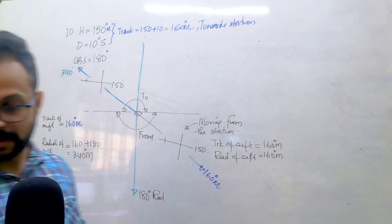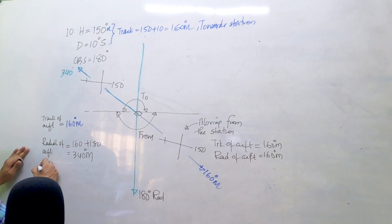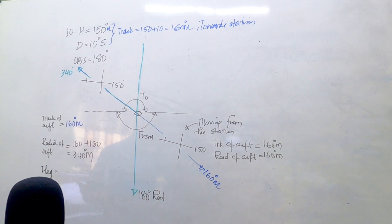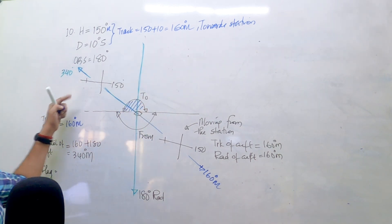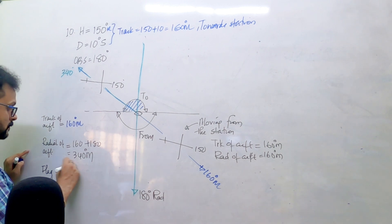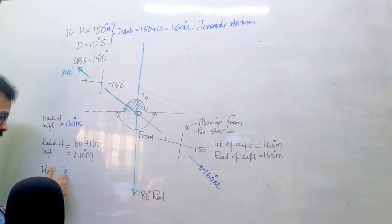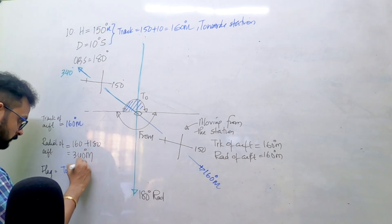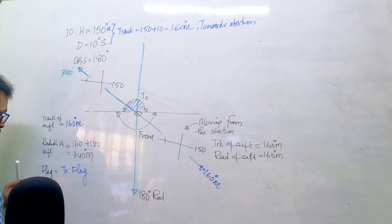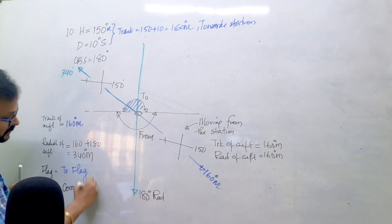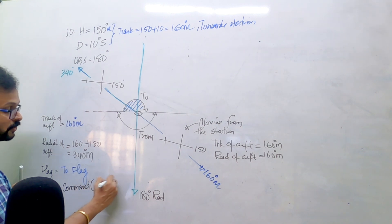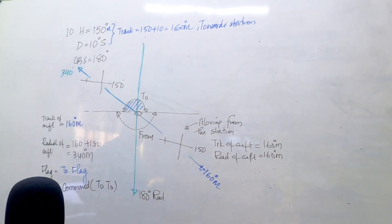Now, what is the flag? The aircraft is approaching the station, so we are on the tail side - the two side - and going to the station. It is command sensing. Therefore the flag is a TO flag. It's command sensing because you are moving to the station on the two side.